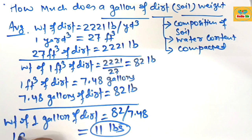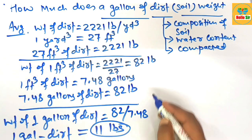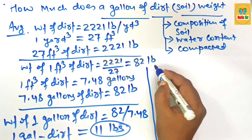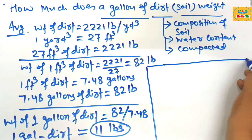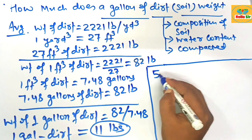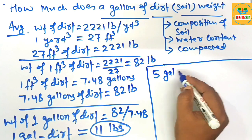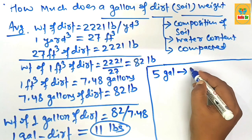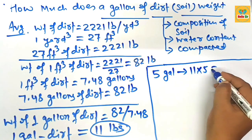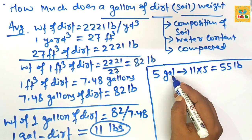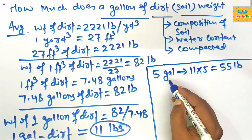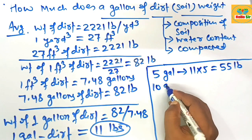Just divide 82 pounds by 7.48 and this comes out to about 11 pounds. It means one gallon of dirt material weighs about 11 pounds. By finding the weight of one gallon of dirt, you can calculate different gallon amounts. For example, what is the weight of five gallons of dirt? Just multiply 11 by 5, which equals about 55 pounds.